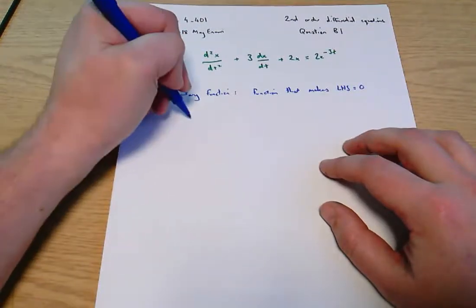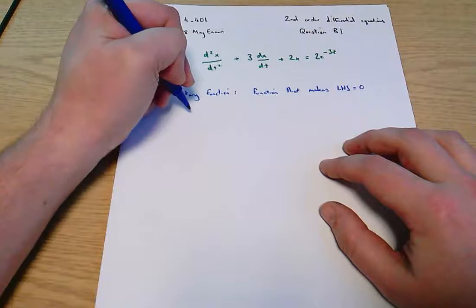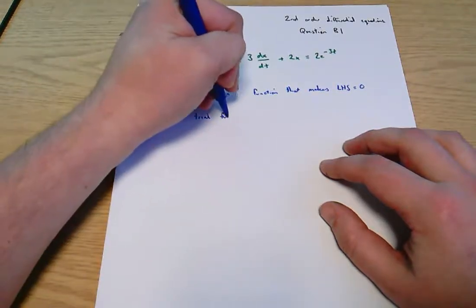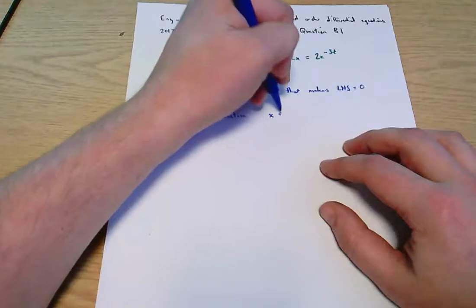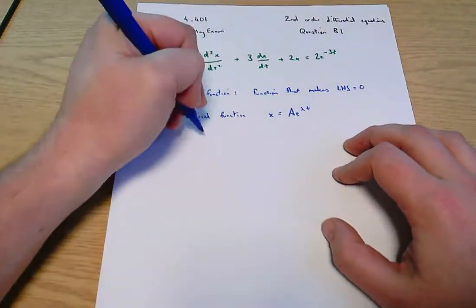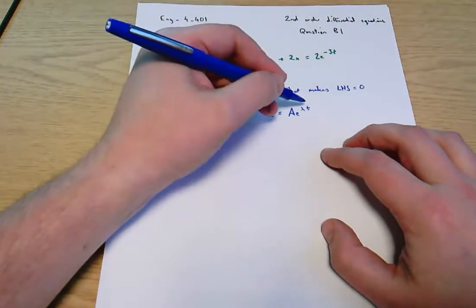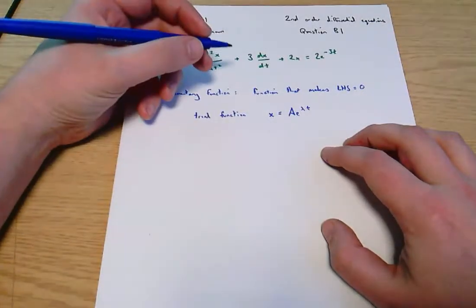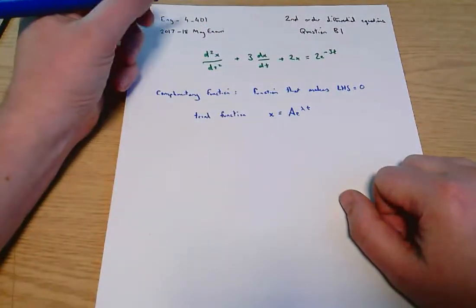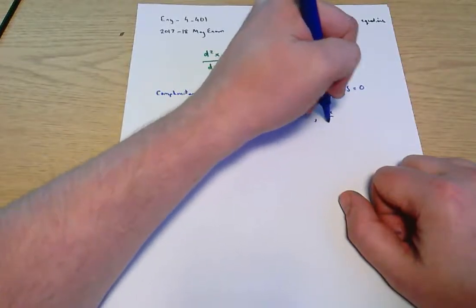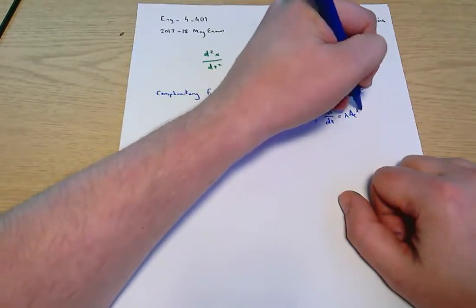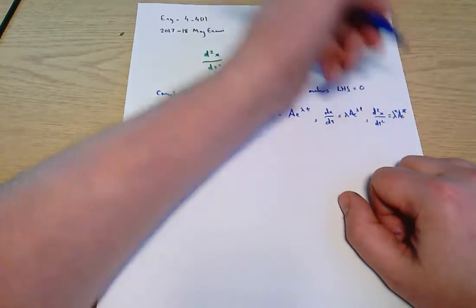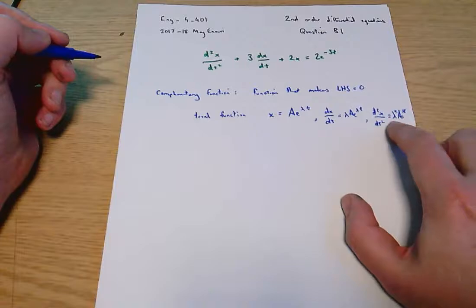We try a trial function — we always use the same one: x equals ae to the lambda t, assuming we're working in x as a function of t. If we were working in y as a function of x, this would be y equals ae to the lambda x. Any pair of variables will work, but this is the structure of our trial function. That means dx by dt equals lambda ae to the lambda t, and d2x by dt squared equals lambda squared ae to the lambda t.